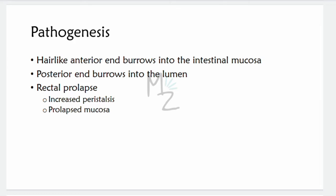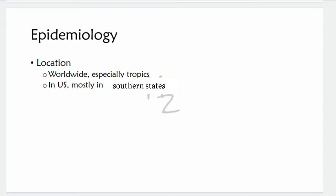Although adult Trichuris worms burrow their hair-like anterior ends into the intestinal mucosa, they do not cause significant anemia unlike hookworms. Trichuris may cause diarrhea, but most infections are asymptomatic. It may also cause rectal prolapse in children with heavy infection, resulting from increased peristalsis in an effort to expel the worms. The whitish worms may be seen on prolapsed mucosa. Whipworm infection occurs worldwide, especially in the tropics, and more than 500 million people are affected.